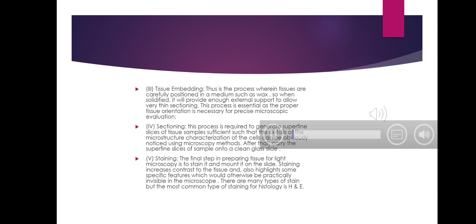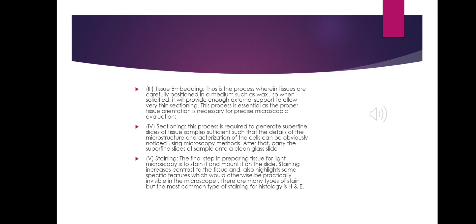Step 3: Tissue embedding. In this process, tissues are carefully positioned in a medium such as wax, so when solidified, it will provide enough external support to allow very thin sectioning. This process is essential as proper tissue orientation is necessary for precise microscopic evaluation.